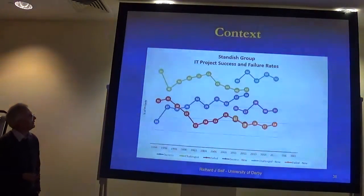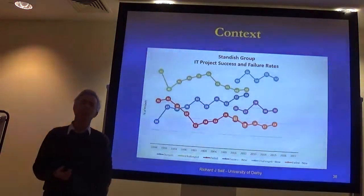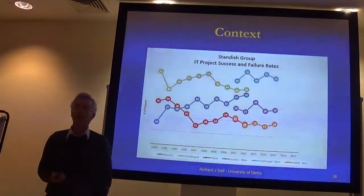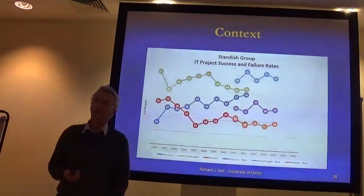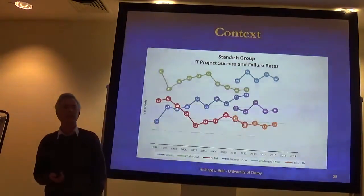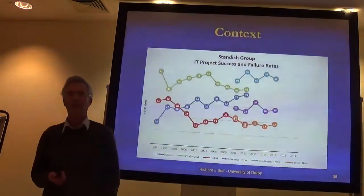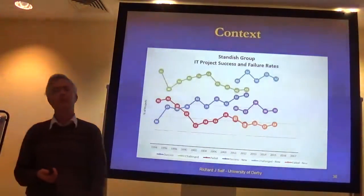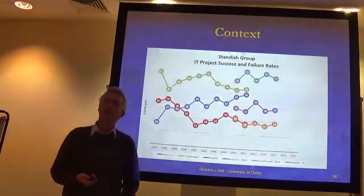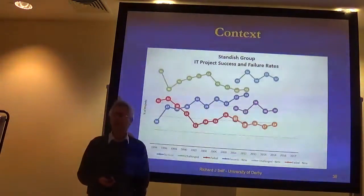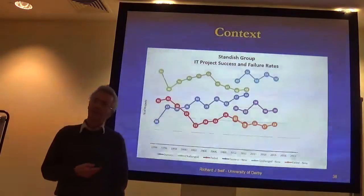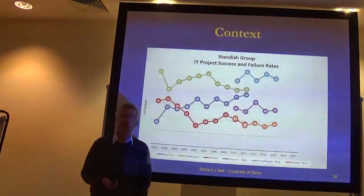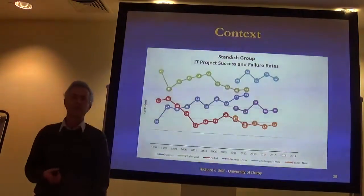Over the years I've been watching the Standish Group reports from the other side of the Atlantic. They've been reporting ever since the very first Chaos Report in 1994 — the number of IT-related projects which are successful, defined originally as on time, to budget, and delivering all of the contracted functionality; those which failed and never delivered; and the middle block, the challenged projects: late, over budget, and delivering only part of the contracted functionality. This is an annual survey of around 50,000 to 60,000 projects assessed every year.